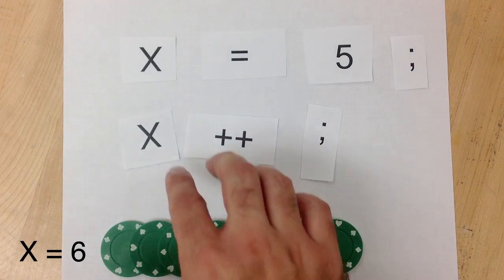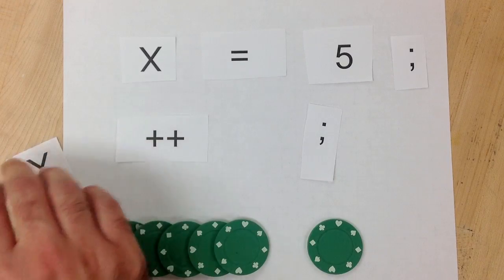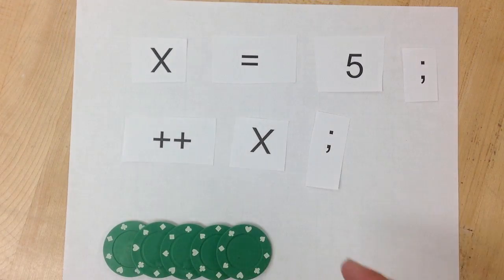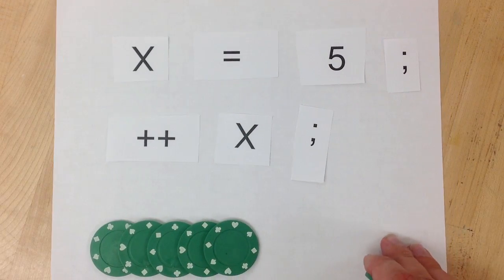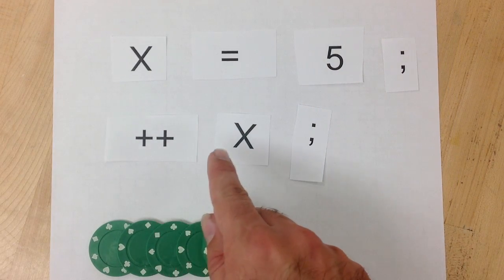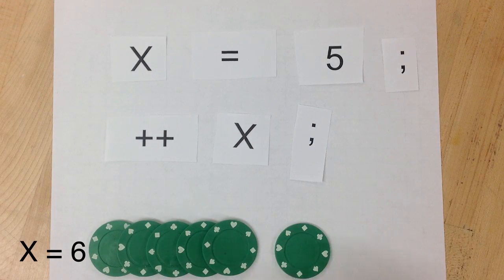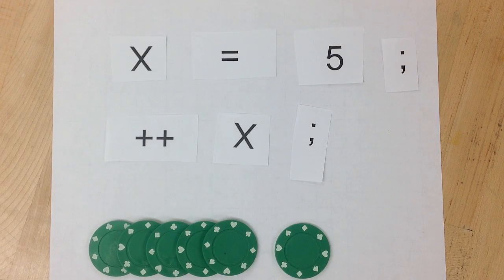Now what confuses a lot of students is if I go ++x. x starts out as 5, and then we do the ++ action, so x is at this point 6, and then we get to the semicolon. So x is the same result, we end up with 6 chips. So what's the difference?